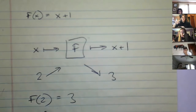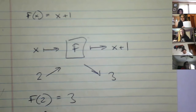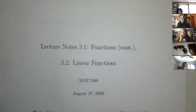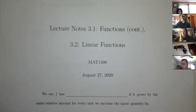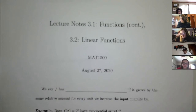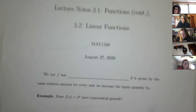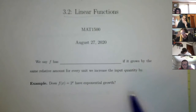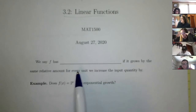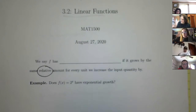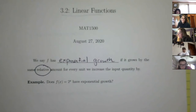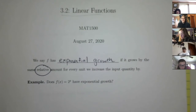So that's the end of the notes from Tuesday; I did post more — I posted them this morning. We're continuing in these notes: it's 3.1 continued and then we're going to start 3.2. We say F has exponential growth if it grows by the same relative amount.